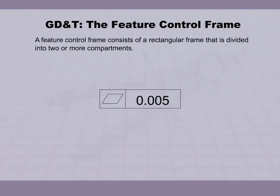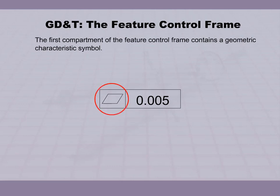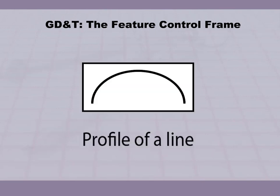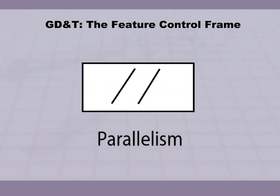A Feature Control Frame consists of a rectangular frame that is divided into two or more compartments. The first compartment of the Feature Control Frame contains a geometric characteristic symbol: Straightness, Profile of a Line, and Parallelism.